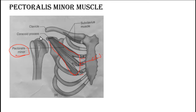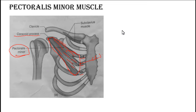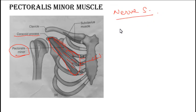The fibers will go laterally toward the coracoid process and will insert at the medial border and the upper surface of the coracoid process. This muscle is also supplied by the medial and lateral pectoral nerve.